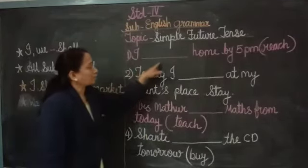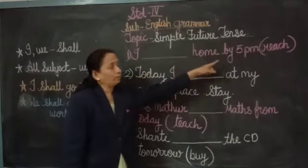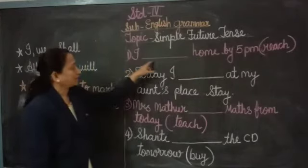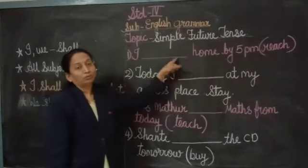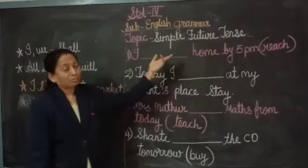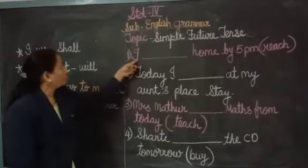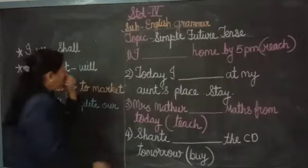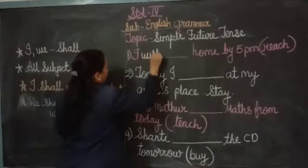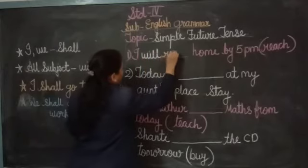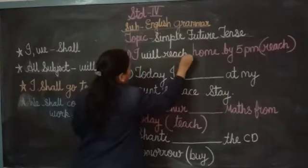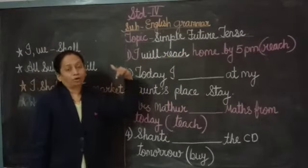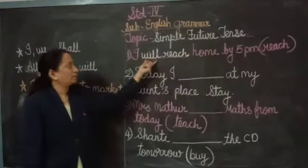Now see the first exercise: 'I dash home by 5pm' — the word in the bracket is 'reach'. We have to complete this sentence in future tense. So we will use 'will' here: 'I will reach home by 5pm.' I have not yet reached, I am talking about the future, so we use 'will'.